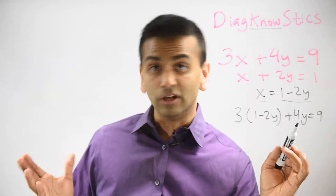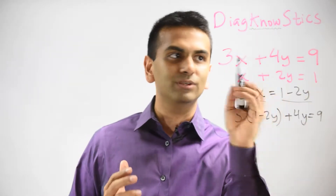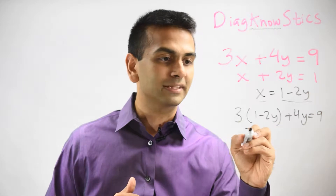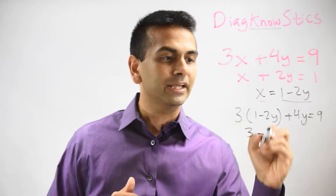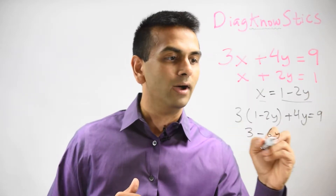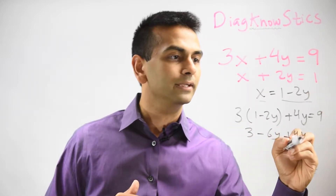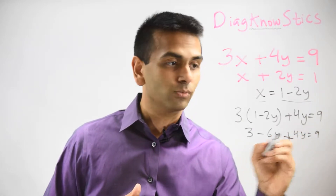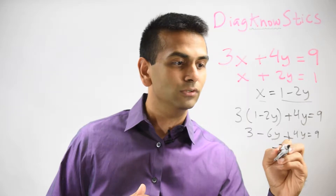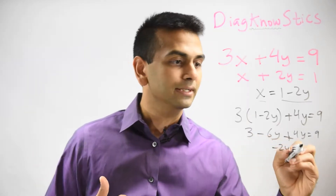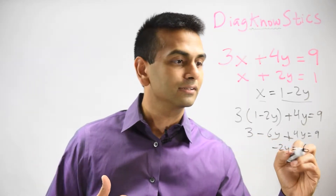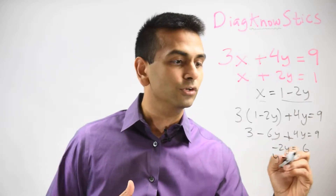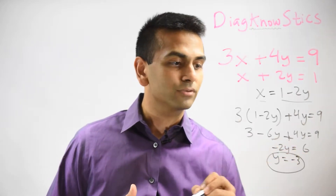With just one equation and two variables you can't really solve, but now we can. Distributing gives us 3 minus 6y plus 4y equals 9. Combining like terms: negative 6y plus 4y is negative 2y, then subtract 3 to get negative 2y equals 6, and divide both sides by negative 2 to get y equals negative 3.